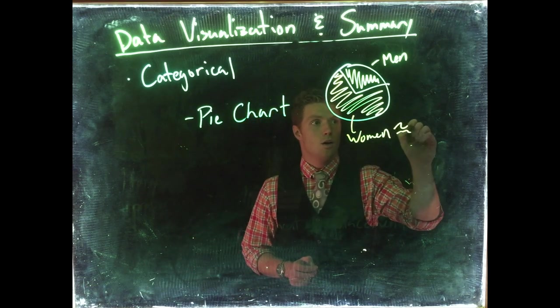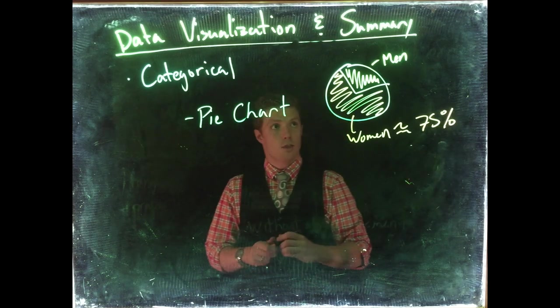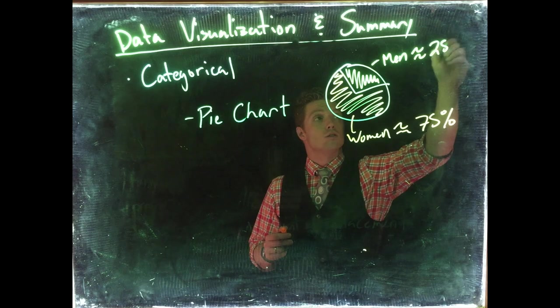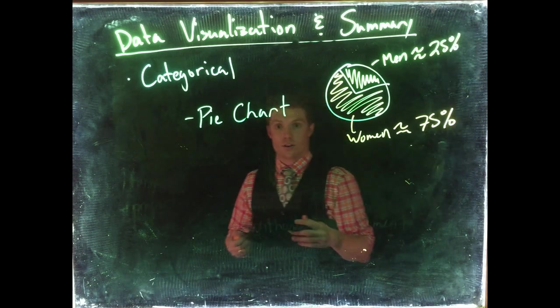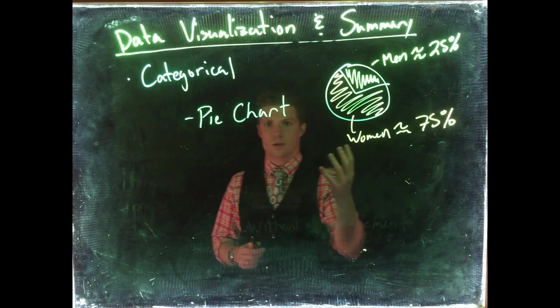We can instantly say even from this rough pie chart roughly what the proportions are. We look at this and the women are right about at 75% and the men are roughly at 25%. Now I could have given you just the numbers but this visualization helps us put them into context.